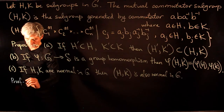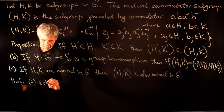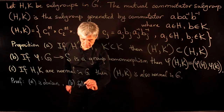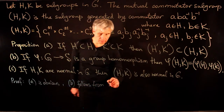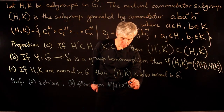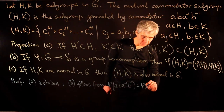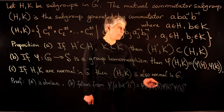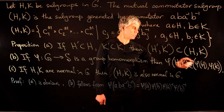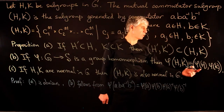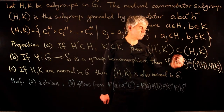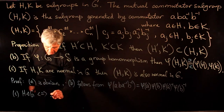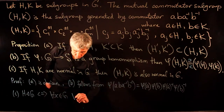For the proof: part A is obvious and follows directly from the definition. Part B follows from the fact that the homomorphic image of a commutator ABA⁻¹B⁻¹ is again a commutator φ(A)φ(B)φ(A)⁻¹φ(B)⁻¹. Using this, we get inclusion in both directions: the image of any commutator in [H, K] is a commutator in [φ(H), φ(K)], and the preimage of any commutator there is a commutator from H and K.